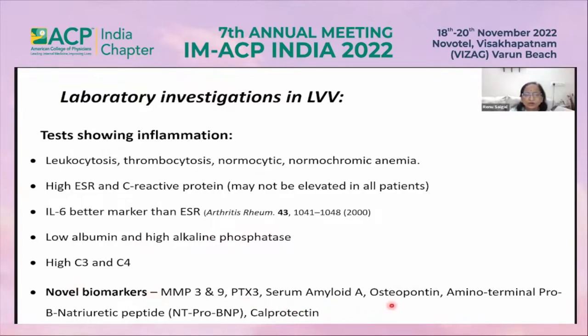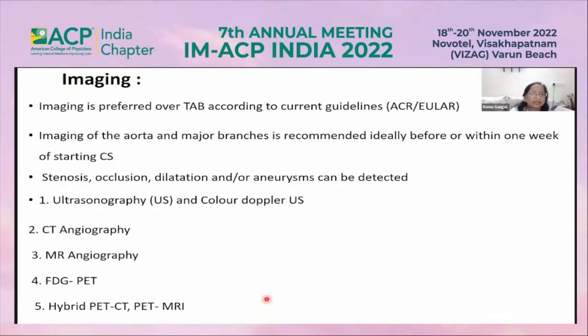Novel biomarkers like MMP-3, MMP-9, serum amyloid A, osteopontin, NT-proBNP, and calprotectin may be raised, but these are not routinely available. Imaging is preferred over temporal artery biopsy according to current guidelines.